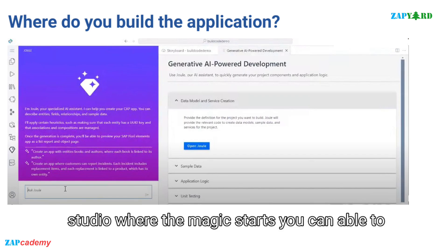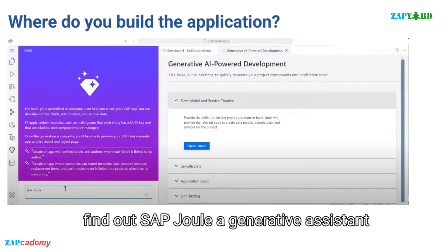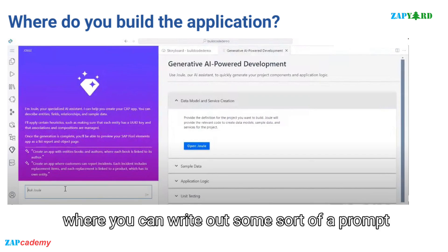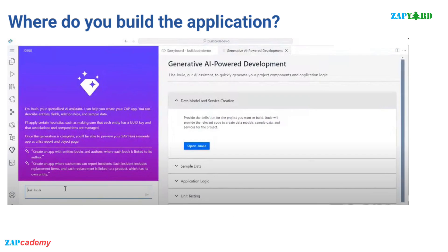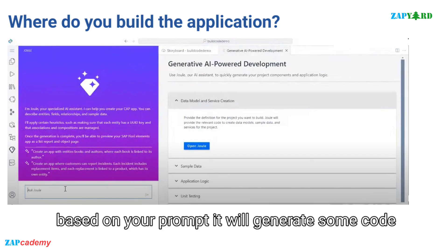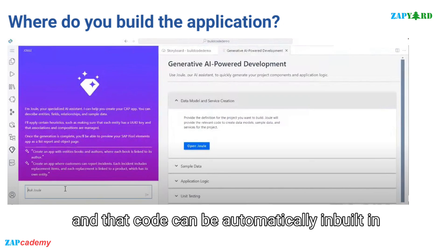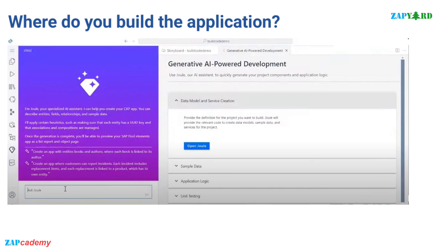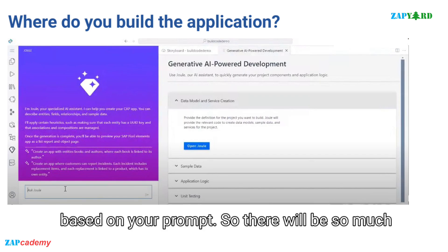You will be able to find SAP Joule, a generative AI assistant where you can write a prompt. Based on your prompt, it will generate code that can be automatically built into your application. It can also create an entire application for you based on your prompt.